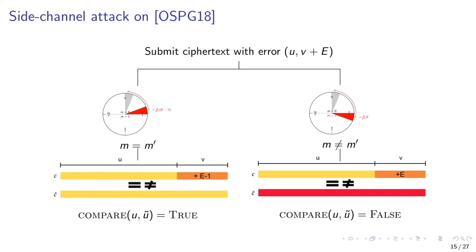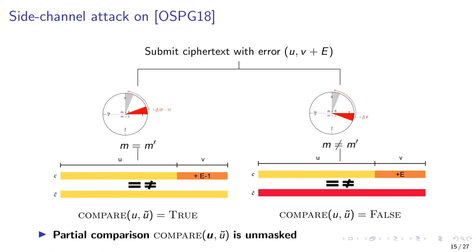On the right, we submit ciphertext with the incremental error e. e is only incremented by 1 from e-1. This time, e is large enough to trigger a bit flip and the submitted and re-encrypted ciphertext will differ completely. Even though the FO transform will detect both classes of modifications and produce the same bit of information — that the ciphertext is rejected — the same doesn't hold true for side-channel information. In particular, the crucial observation is that the hash-based method unmasks a partial comparison of u. On the left, this comparison is true; on the right, this comparison is false.